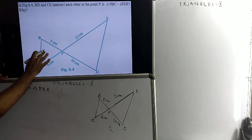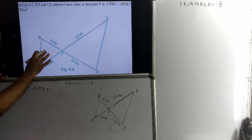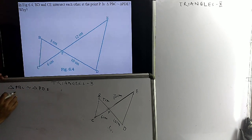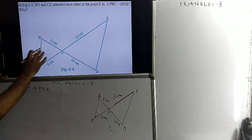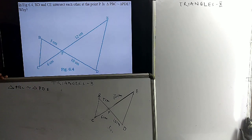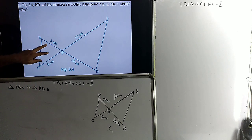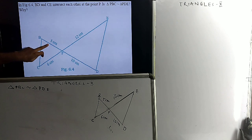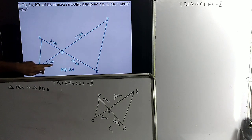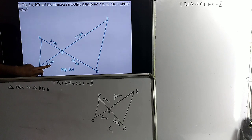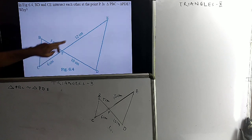In this problem, we want to show that these two triangles — this triangle and this triangle — are similar. What is given? This PB side is given 5 cm, and in this triangle, this piece is given 6 cm. This side is given 10 cm, and this side is 12 cm.